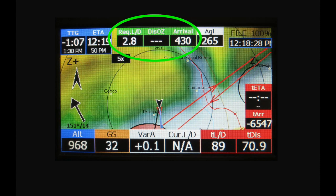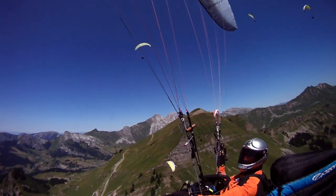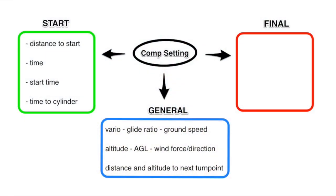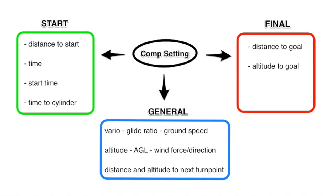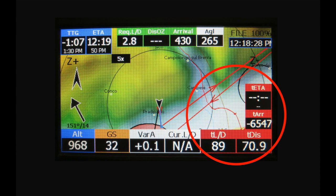So for the final glide setting, I use some more information to reach the goal: distance to the goal, altitude to goal, and glide ratio. All information in red are those I need for the final glide. But don't forget to cross the line.